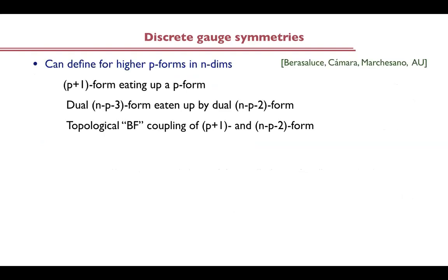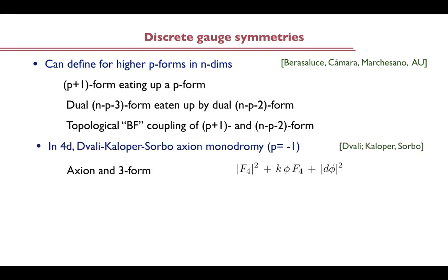Before going there, let me emphasize that this story — starting with one-forms eating up axions or zero-forms — can be generalized to higher p-forms in various dimensions. You can talk about the (p+1)-form eating up a p-form, which is analogous to a one-form eating up a scalar with charge K. Or you can talk about the dual picture where you have the dual (n-p-3)-form, where n is the number of spacetime dimensions, eaten up by the dual (n-p-2)-form. There is also a mixed description with a topological coupling between different forms — the analog of the Stückelberg coupling.